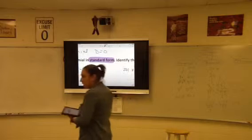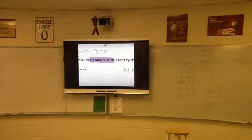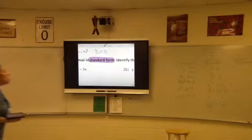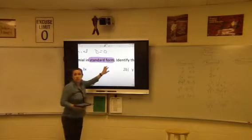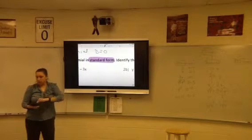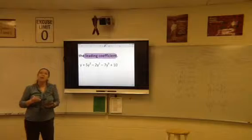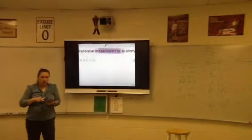If you go back and look at your definition of standard form, you're basically just sticking it in order. You're going to put the biggest exponent all the way to the smallest exponent. We are still working exponents in this chapter. So you're going to go from big exponent all the way down to smallest, and then it says identify the leading coefficient, which we have to do after we put it in order.